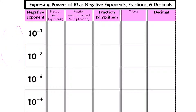On to the math. Let's take a look at the exponent term 10 to the negative first. What's important to understand about negative exponents is that negative exponents usually are not negative numbers. What they are are values between 0 and 1 — in other words, fractions or decimals.